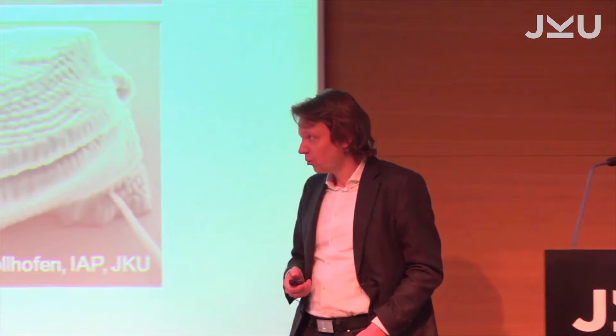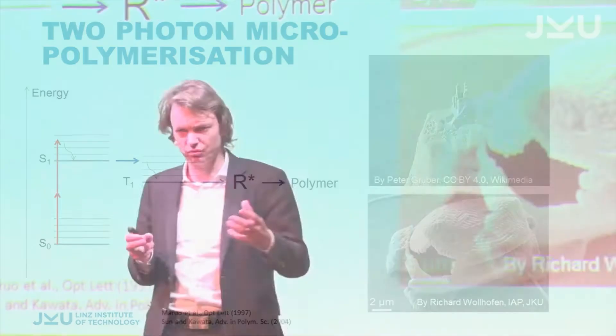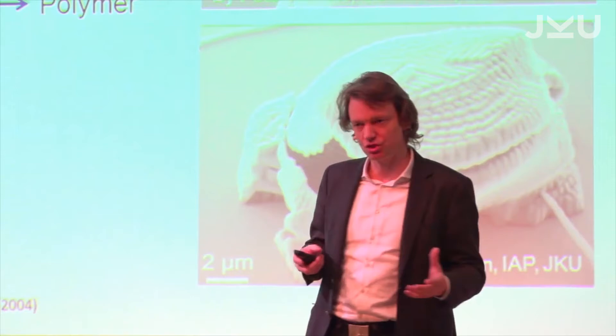One kind of photochemistry is photopolymerization. It's just a very small branch of big photochemistry, but photopolymerization works best now in our labs, and that's why I started with that. So, photopolymerization: you shine light into a photoresist, and where you actually shine the light, the photoresist solidifies and you create a structure.